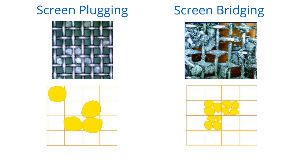Material characteristics such as static, moisture, and near-size percentage can also affect screen blinding. However, the most significant variable is the screen motion technology.